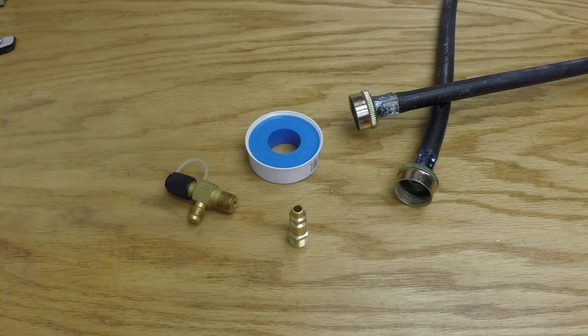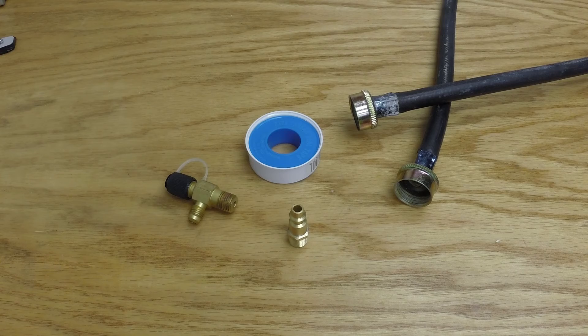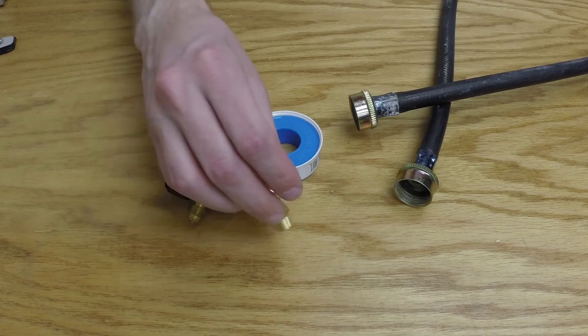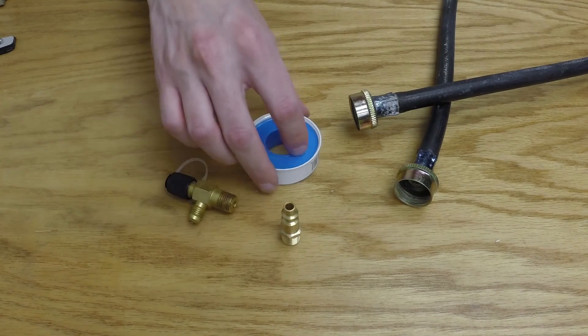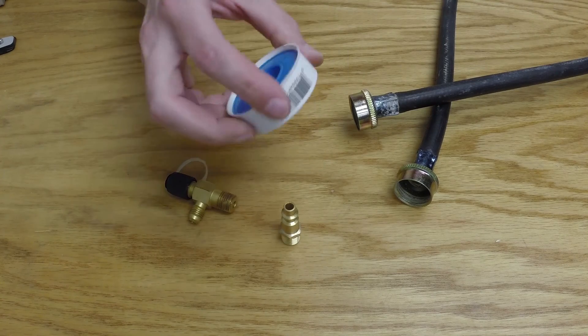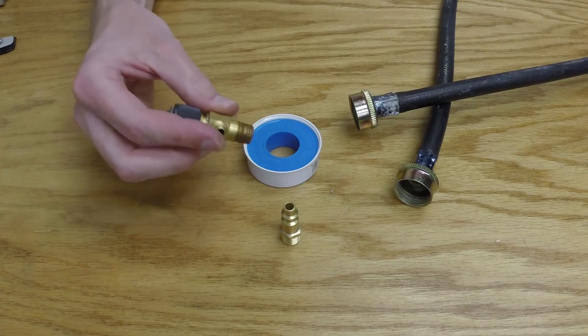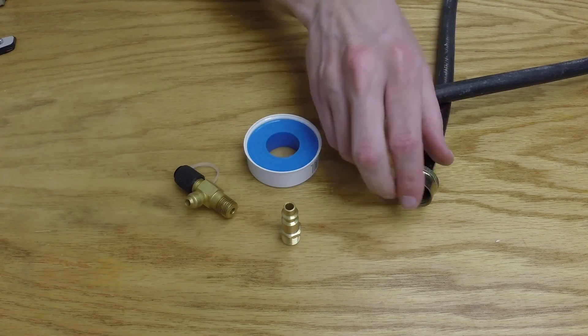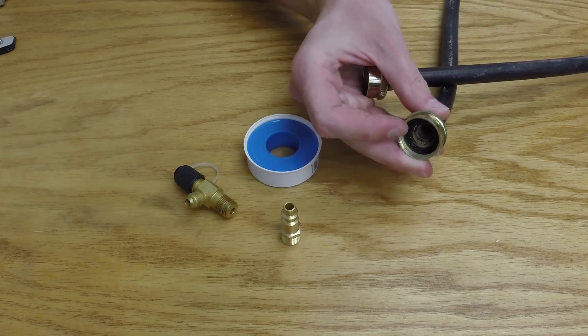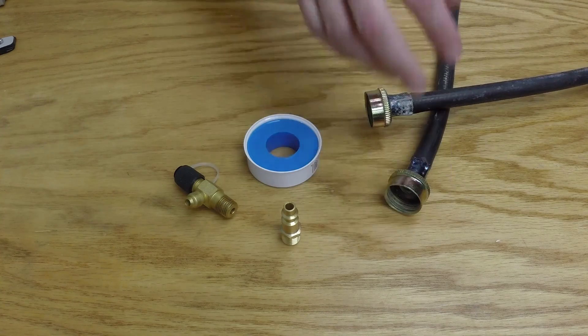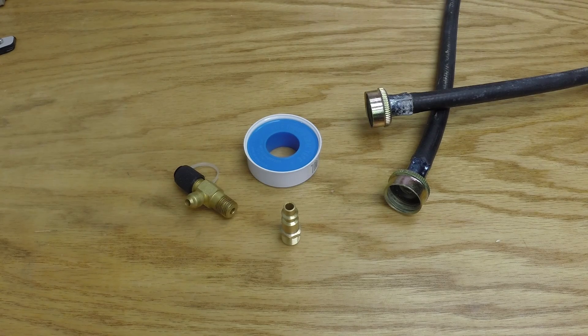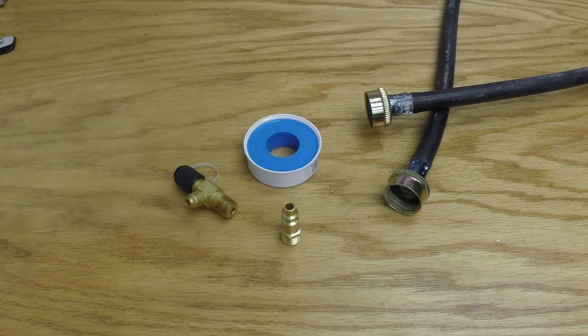It's important to know what is actually providing the seal between two mated surfaces, whether it is the threads of the surface themselves. Do these surfaces require some additional material, like Teflon tape? Is it a flare on the surface that's providing the seal? Or do you have some kind of gasket involved in your seal that would also need to be checked? Depending on what kind of seal you have will change how you approach the problem, how you search for leaks and try to fix them.